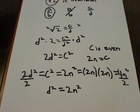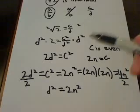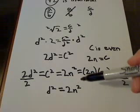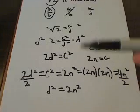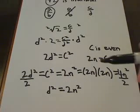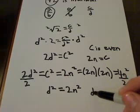What does that tell us about d? Well, d squared is 2 times n squared. But wait, that makes d squared an even number. And if d squared is even, then d is also even.